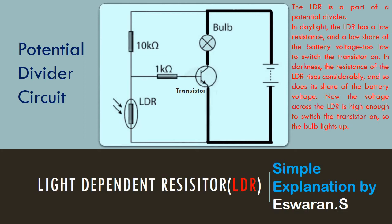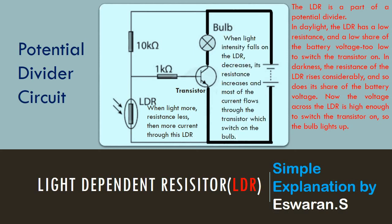Here you can see an LDR, two fixed resistors, a bulb, a cell that is a battery, and a transistor. This transistor will act as a switch and switch on this bulb when it gets enough current from the battery. When the light intensity falling on this LDR increases, the LDR's resistance decreases and allows most of the current from the battery to pass through this LDR. When the light intensity falling on this LDR decreases, the LDR's resistance increases and so the current from the battery will pass through this transistor, which will switch on this bulb.